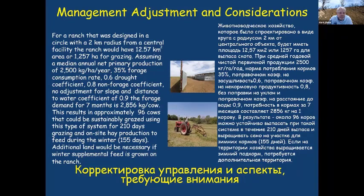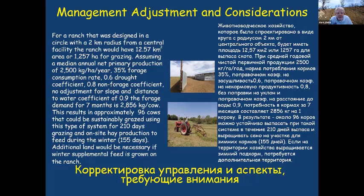Forage for a ranch designed as a circle with a two-kilometer radius from a central facility would have 12.57 square kilometers, or 1,257 hectares for grazing. Using median annual net primary production of 2,500 kilograms per hectare, a 35% forage consumption rate, a 0.6 drought coefficient, a 0.8 non-forage coefficient, a 0.9 distance-to-water coefficient, and a forage demand of 2,856 kilograms per cow for seven months, the result is approximately 96 cows that could be sustainably grazed using this type of system.